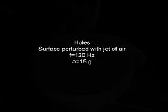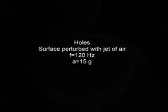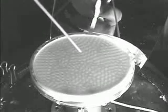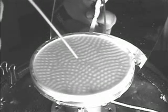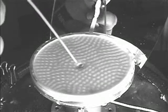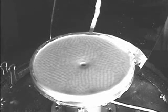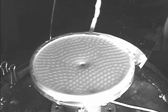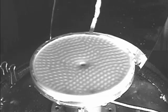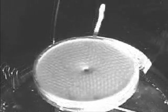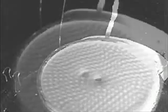Now we're going to shake the mixture with a fixed frequency and acceleration and apply a small puff of air. The puff of air creates an indentation. That indentation grows to a hole and it just sits there — the hole doesn't disappear. Here's a close-up showing that the hole actually penetrates the entire layer.